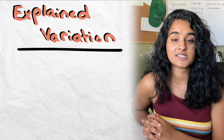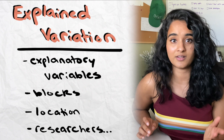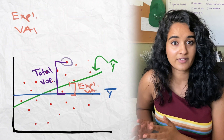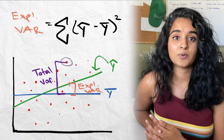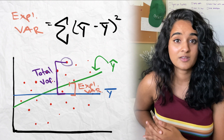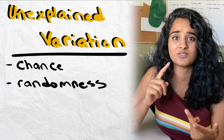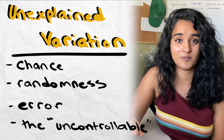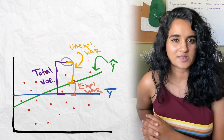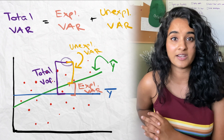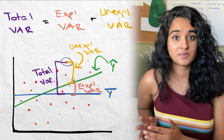Explained variation is anything you can confidently say is due to the regression model itself — your explanatory factors. Mathematically, it's the distance from all your predicted y values (y-hat) to y-bar. We square these values because some distances are negative, and squaring gets rid of the negatives so they don't cancel out. Then we have unexplained variation — variation we don't know the source of. It can come from chance, randomness, or error. Mathematically, it's the sum of squared distances from your y values to your y-hat values. Total variation is always a combination of explained and unexplained variation.